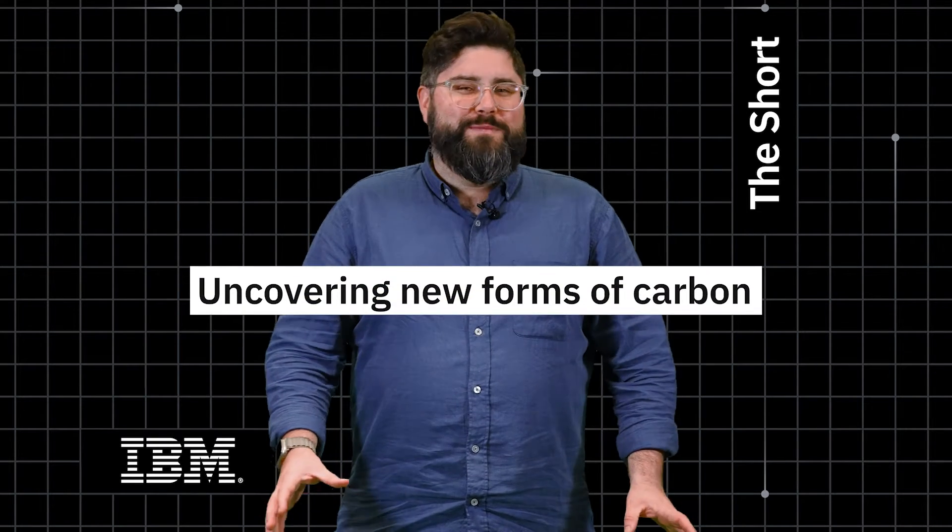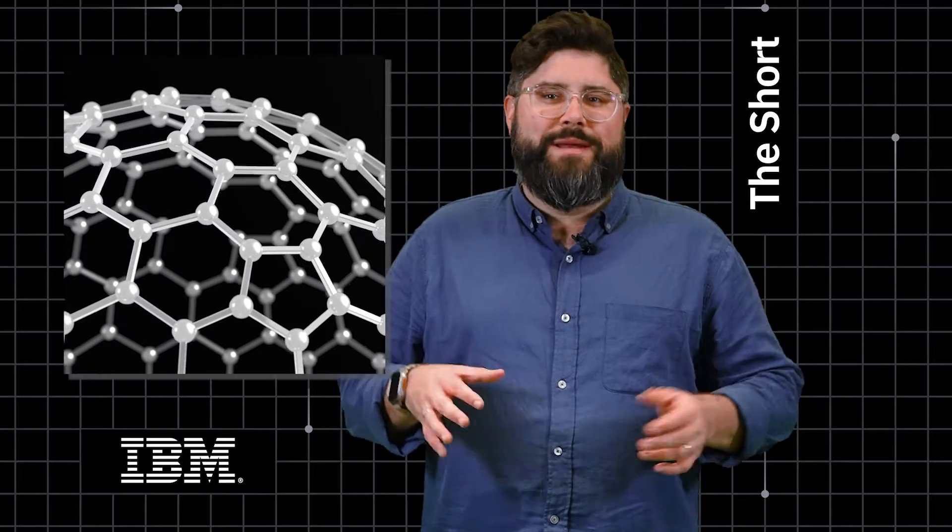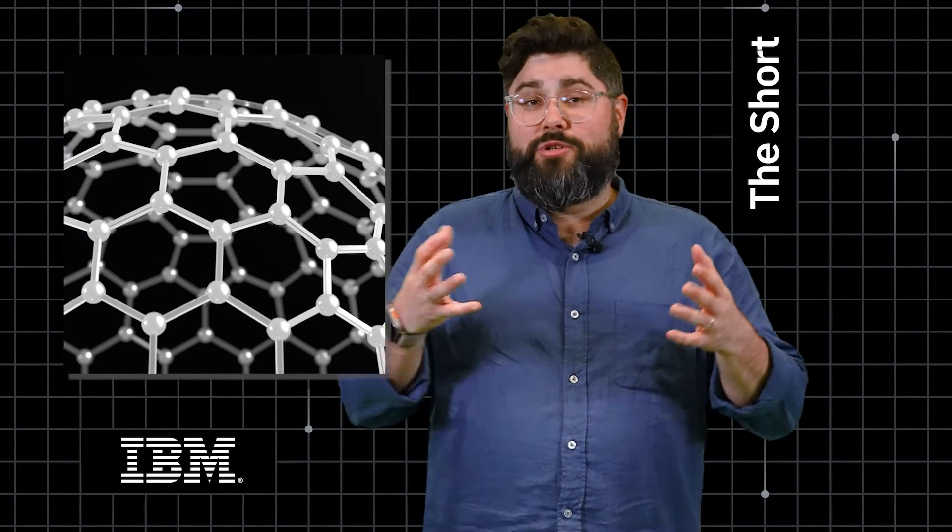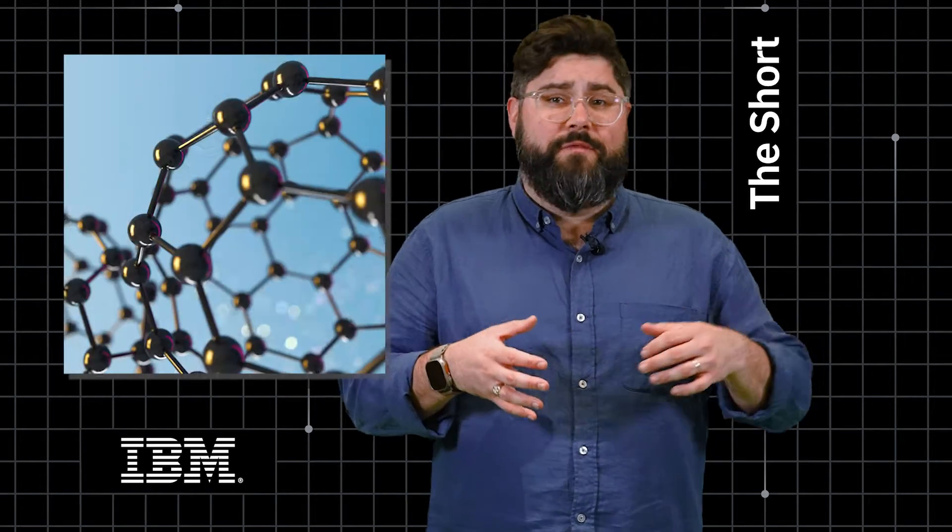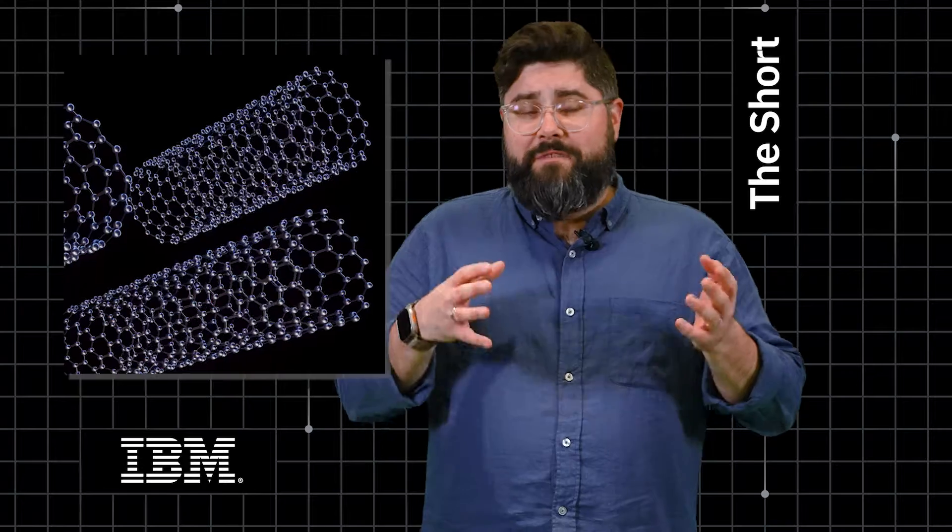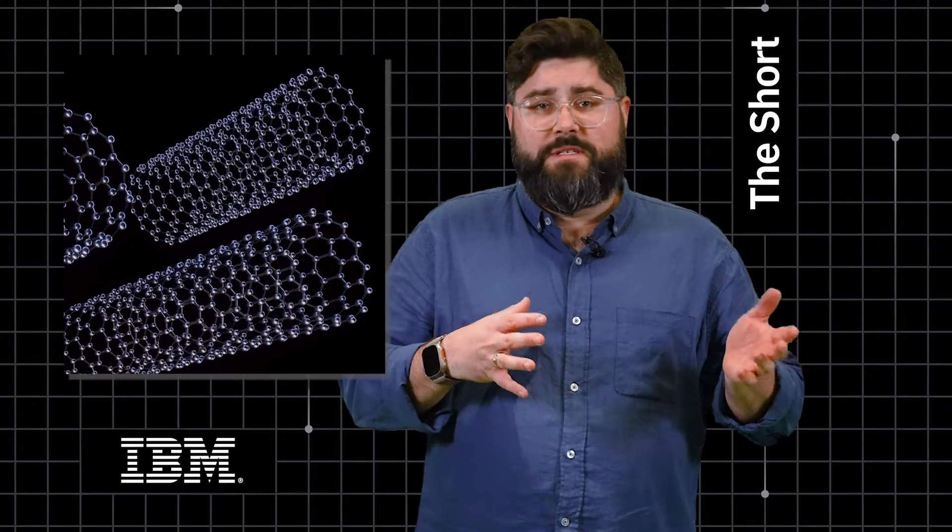Next, uncovering new forms of carbon. Synthetic carbon allotropes are when carbon atoms are arranged in different combinations to produce new properties. They've led to the discovery of materials like graphene, carbon nanotubes, and carbene, and have advanced our understanding of fundamental physics and chemistry.